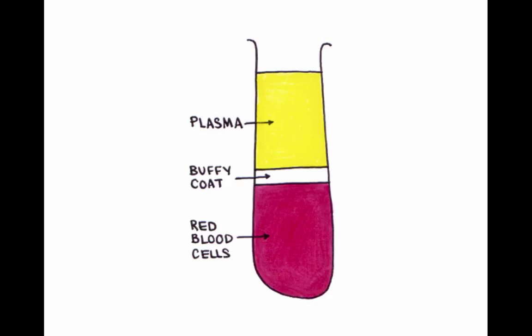Plasma, which is a watery solution containing proteins; a buffy coat layer, which is made up of platelets and white blood cells, also known as leukocytes; and red blood cells.